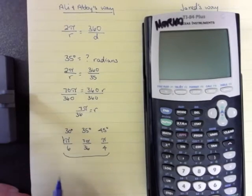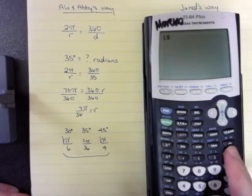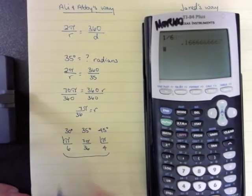So this is really 1 sixth, and this is really 1 fourth. 1 sixth on my calculator, if I do it, is 0.16 repeating.